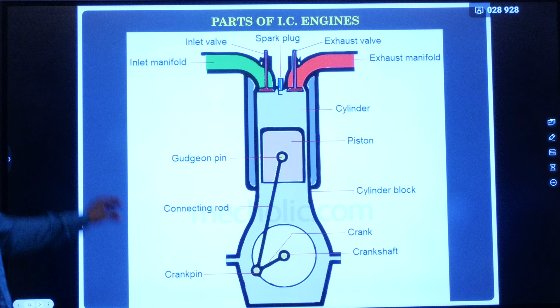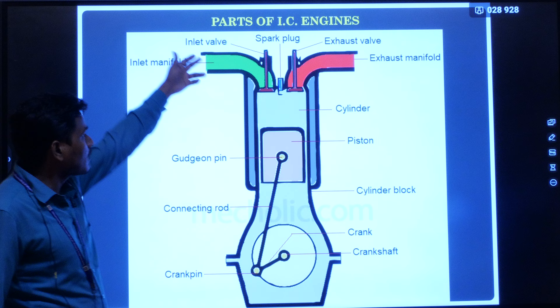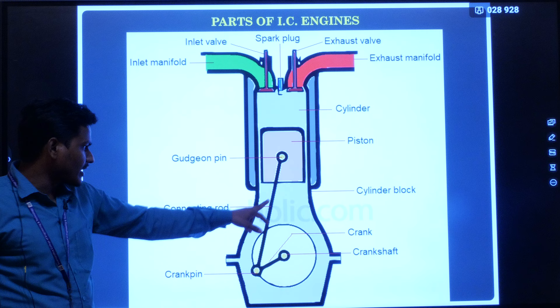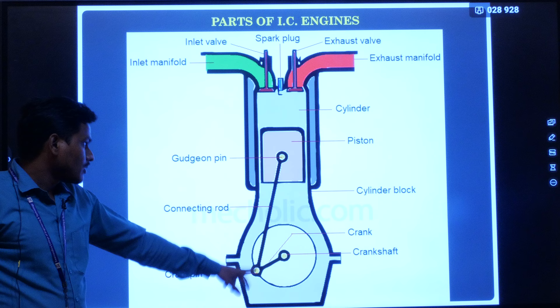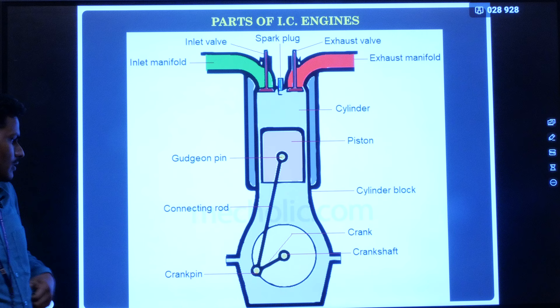Coming to engine parts — these are the major parts, which are very important from an exam point of view. First, the inlet valve and exhaust valve. At the topmost position we have the spark plug. This is called the cylinder, and this is called the piston. The piston is connected with the crankshaft via a connecting rod. This is the crank and this is the crank pin. The gudgeon pin is used to connect the piston with the connecting rod, and the crank pin connects the connecting rod with the crankshaft.